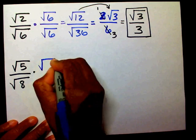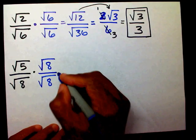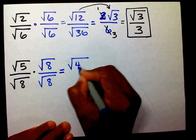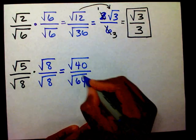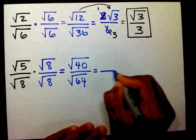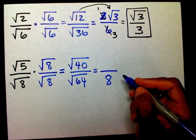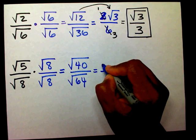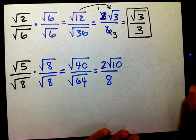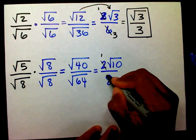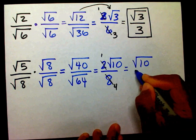I'm going to rationalize my denominator by multiplying the numerator and the denominator by radical 8. 5 times 8 is radical 40, and 8 times 8 is radical 64. There, I've created another perfect square. The square root of 64 is 8, and the square root of 40 is 2 radical 10. Let's simplify the 2 eighths: 2 will go into 2 one time, and 2 will go into 8 four times. So our final answer is going to be radical 10 over 4.